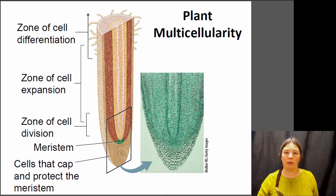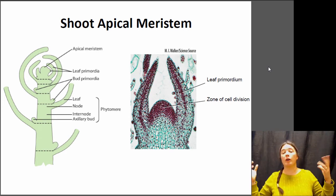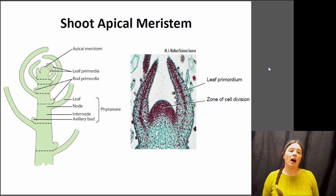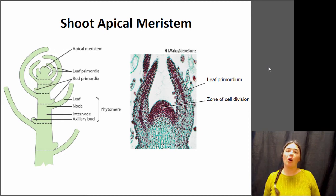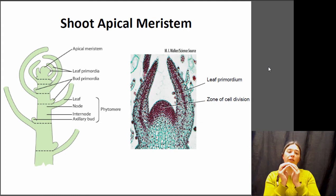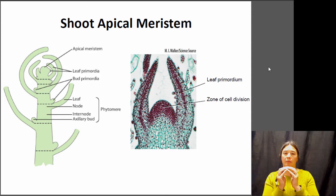We're going to look at shoots and roots and see how they're a little bit different from each other. Let's start with the shoot. The shoot is the above-ground part of the plant, and shoot elongation is dependent upon what's called the apical meristem, or the tip bud of that shoot. That's the place where cell division is going to be taking place.